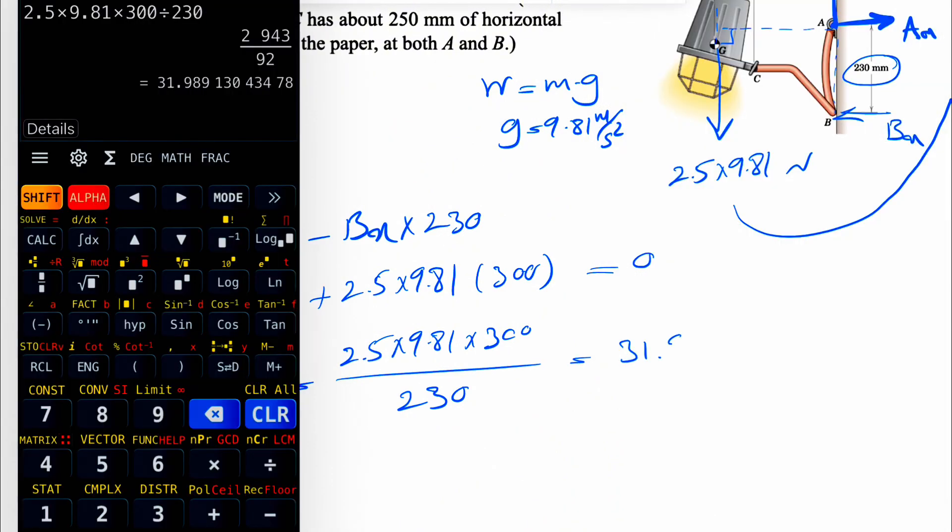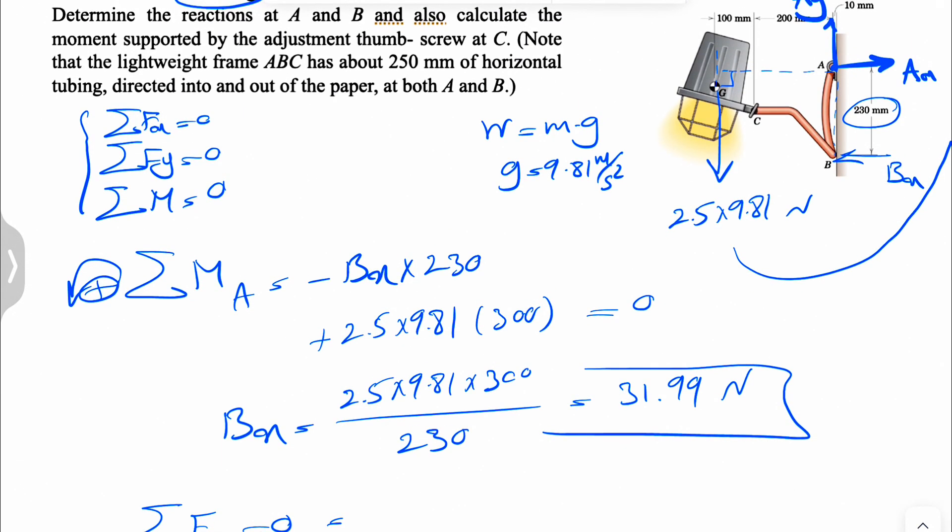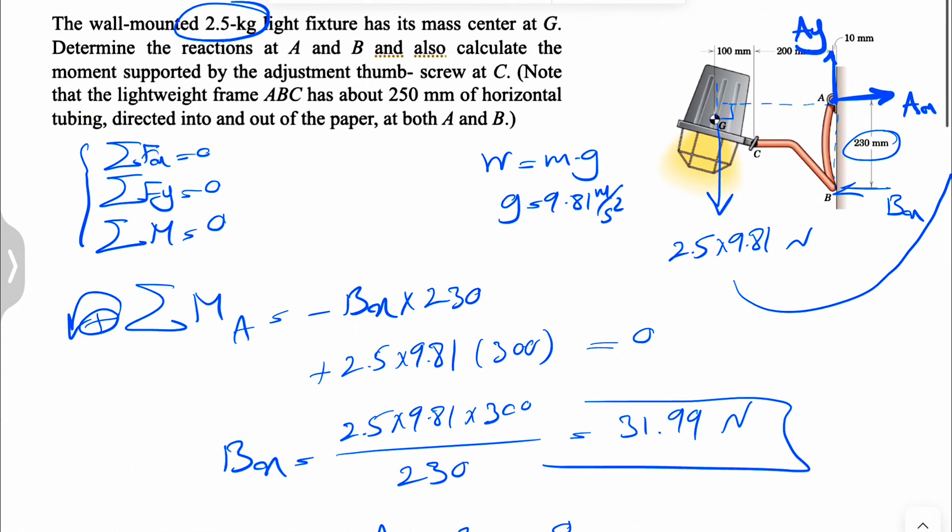So now if we just do sum of all forces in X direction equals zero, we're going to have only AX is unknown. So AX minus BX equals zero, which means AX is also 31.99 Newtons. Again, no negative sign. Our assumption for the directions was correct.